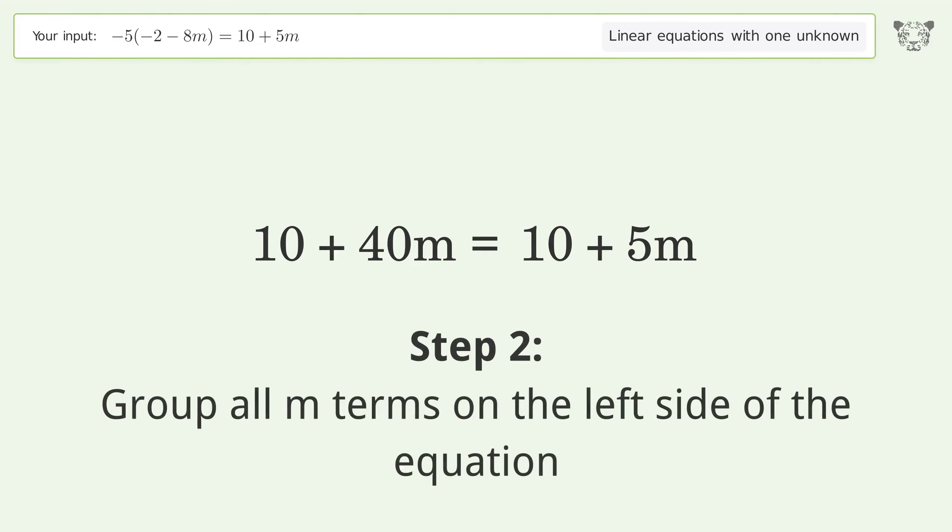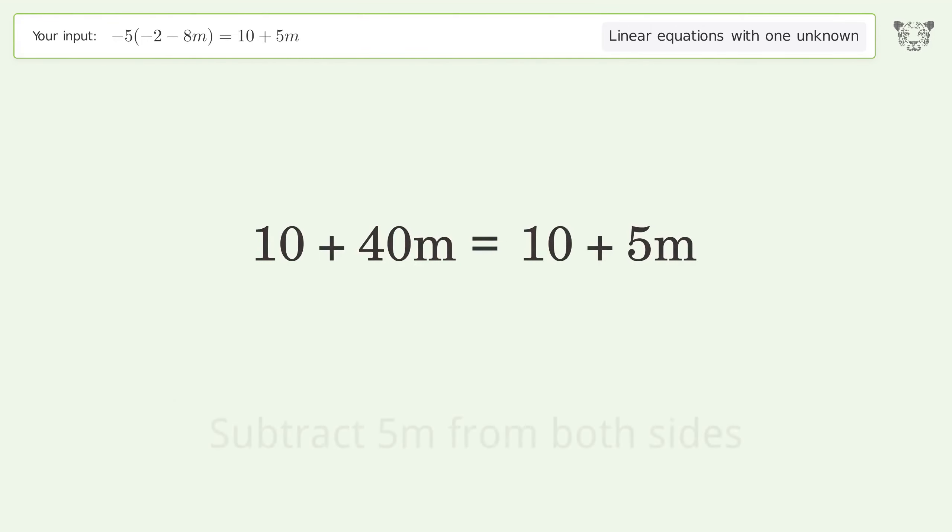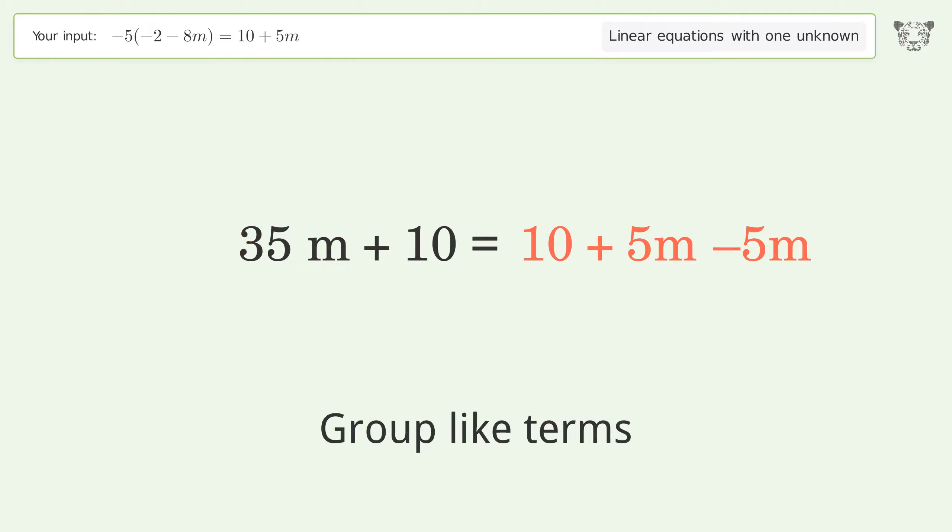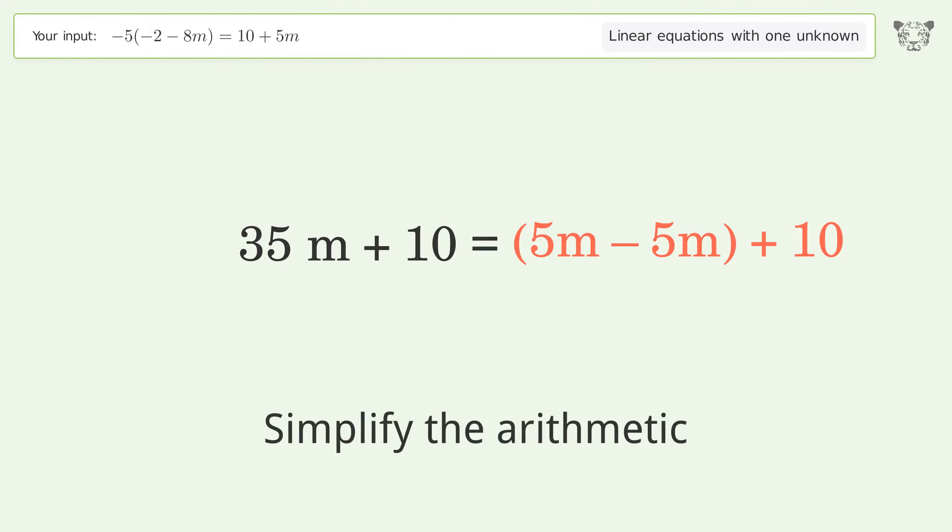Group all m terms on the left side of the equation. Subtract 5m from both sides, then group like terms and simplify the arithmetic.